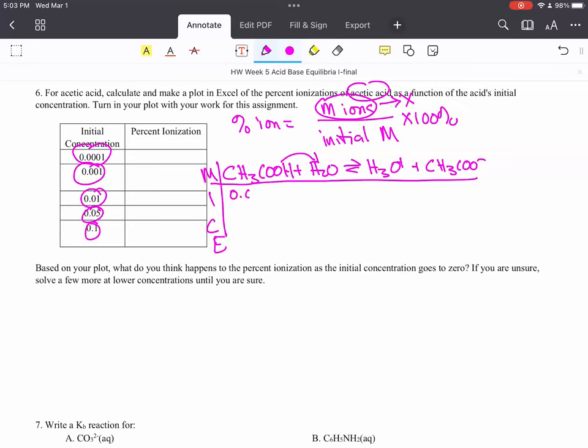Let's start with 0.0001. We have nothing for our water. We have approximately 0 and 0 plus X.